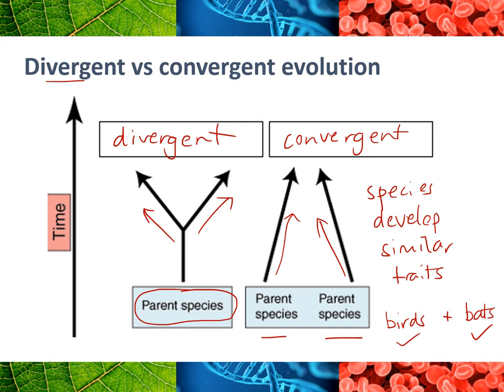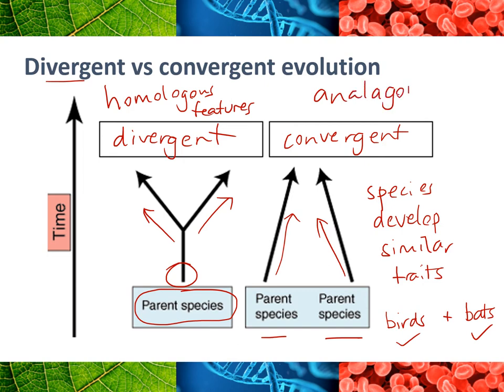Divergent evolution is often associated with homologous features — for example, humans and whales have very similar bone structure in our hands and whales' fins, even though we're clearly very different organisms, because we're both mammals that evolved from a similar parent species. Convergent evolution is associated with analogous features — for example, the wings of an insect, a bird, and a bat are very different internally but serve similar functions.